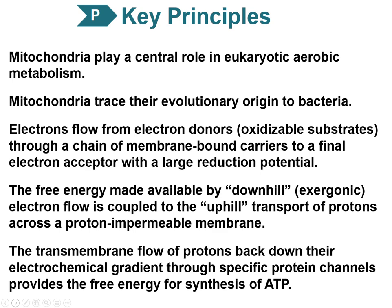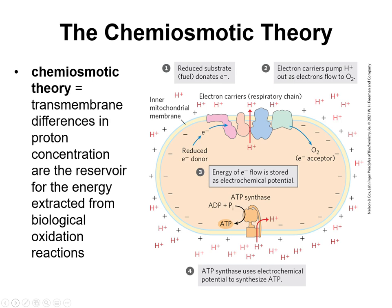These are the key principles for the chapter. Make sure that they make sense — you can expound upon them after listening to this lecture and reviewing your notes. Oxidative phosphorylation is hinged on what's called the chemiosmotic theory, meaning there's a difference in potential across the membrane of the mitochondria. That difference is caused by proton concentration being high on one side and low on the other, and this difference in concentration serves as a reservoir for the energy extracted from biological oxidation reactions.